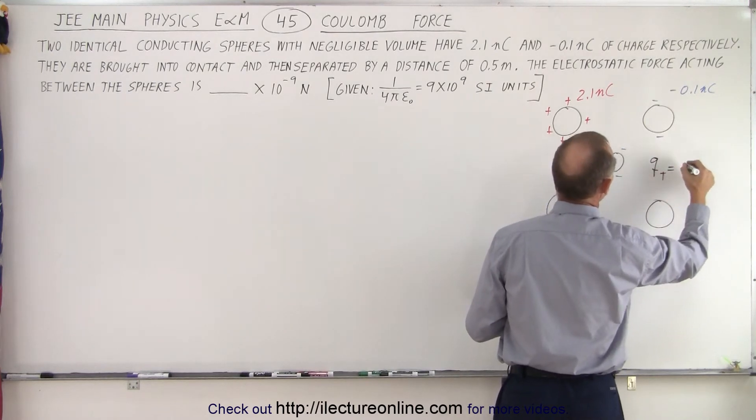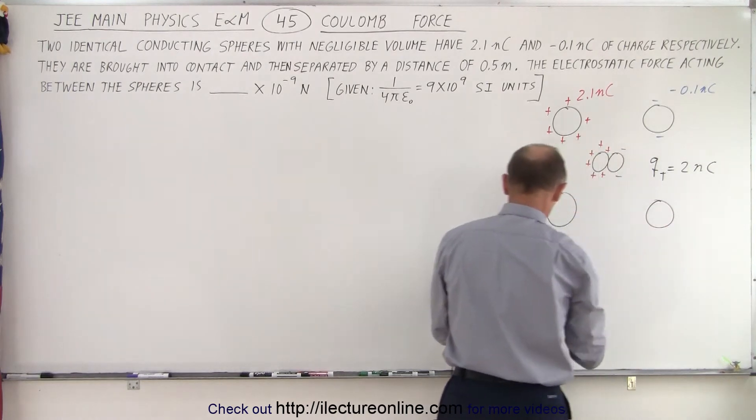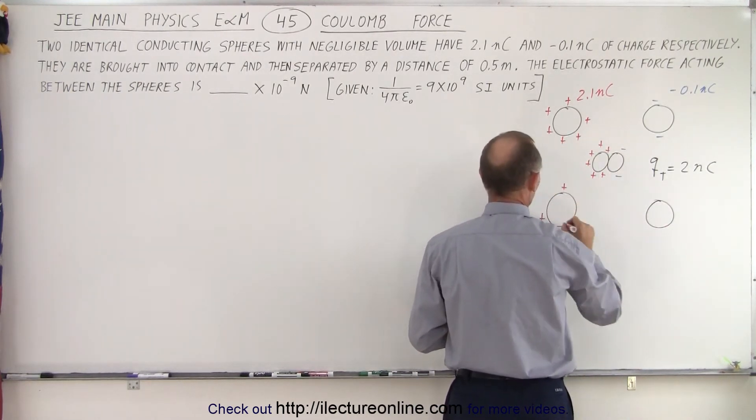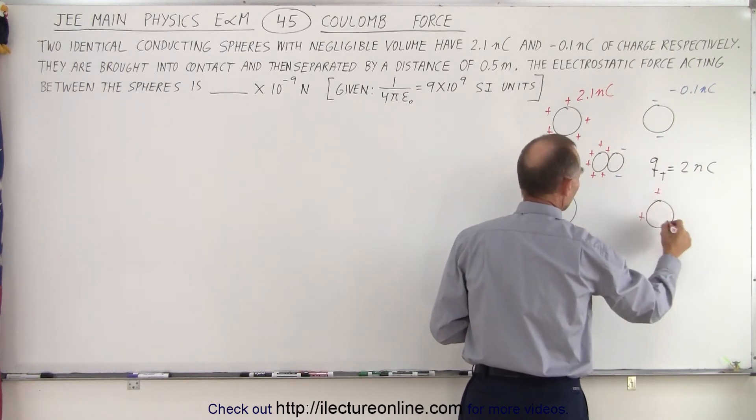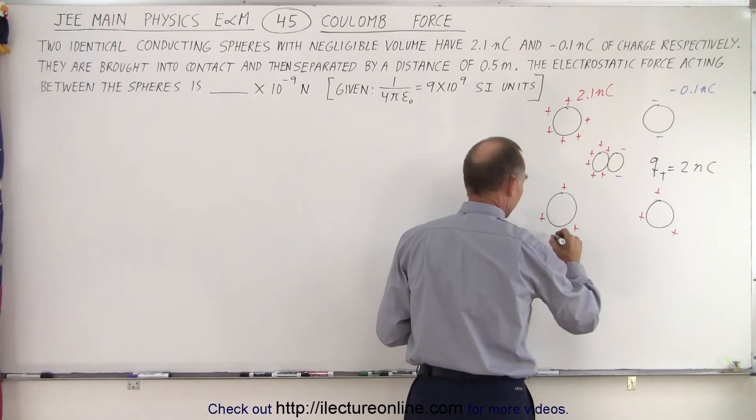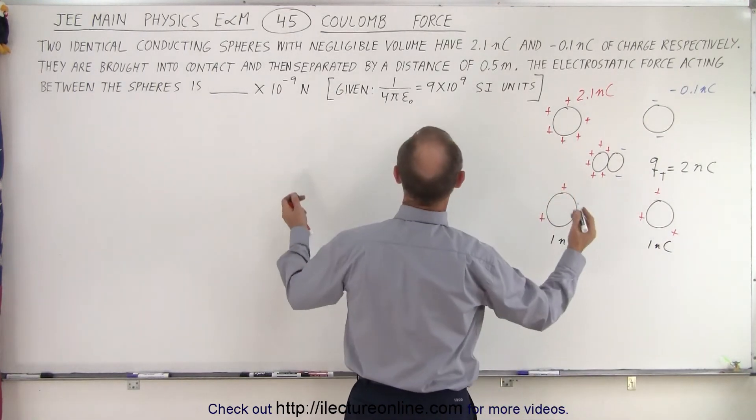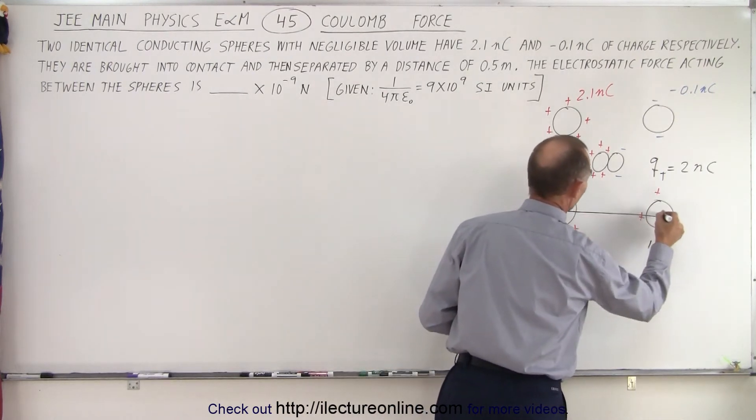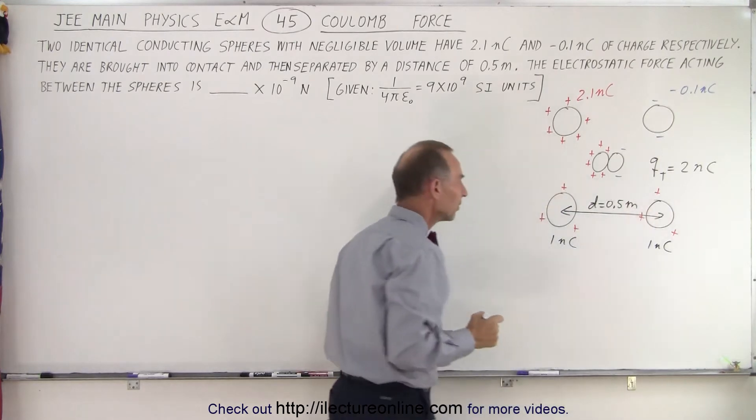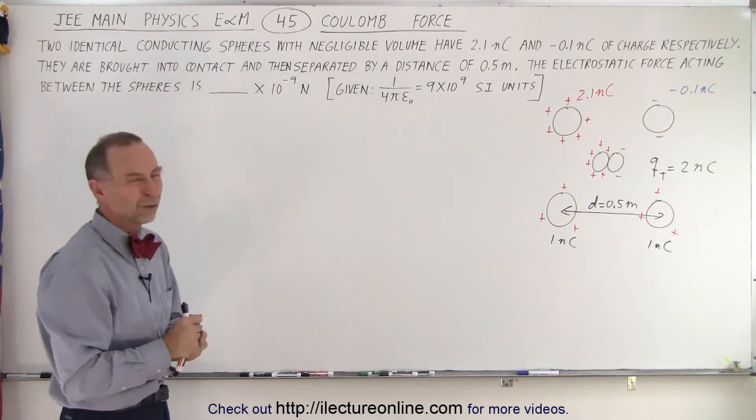When you separate the two spheres, you end up with half on each of the spheres. So in this case you end up with one nanocoulomb of charge on each sphere. We have one nanocoulomb here and one nanocoulomb there, and they're separated to a distance of 0.5 meters.